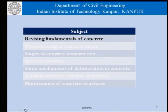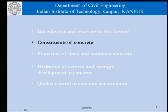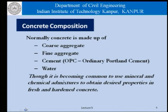Continuing with our discussion on the fundamentals, which is the first part of the discussion. We have been talking about constituents of concrete and we know that concrete comprises of coarse aggregate, fine aggregate, ordinary Portland cement and water. We are not talking of mineral and chemical admixtures, which have become an inherent and integral part of concrete construction, but we will talk about that later. As far as the first round is concerned, we will talk of absolutely normal concrete comprising of these four elements.